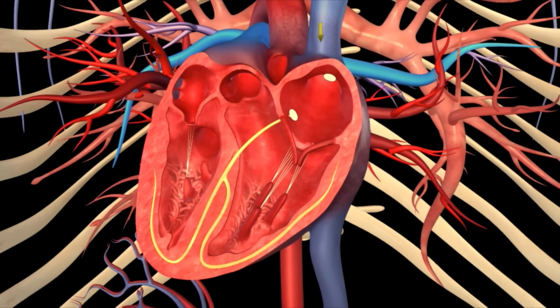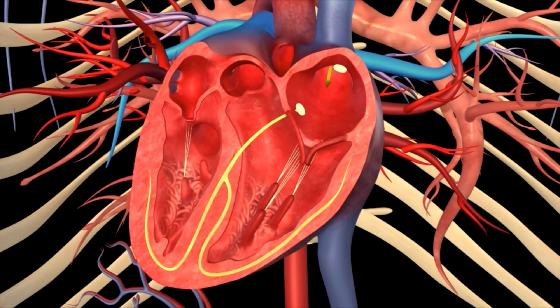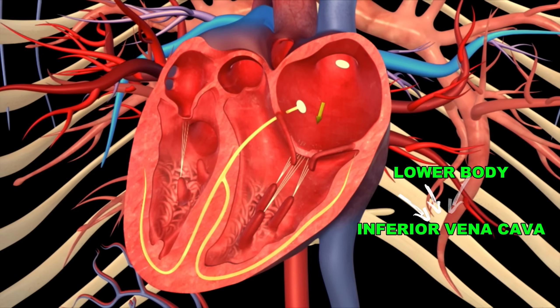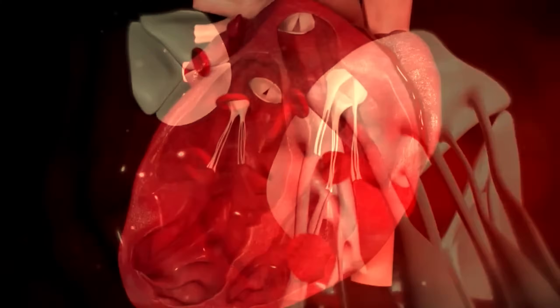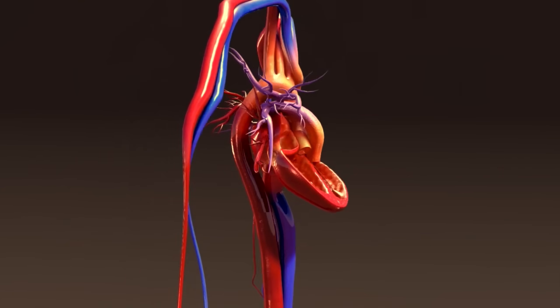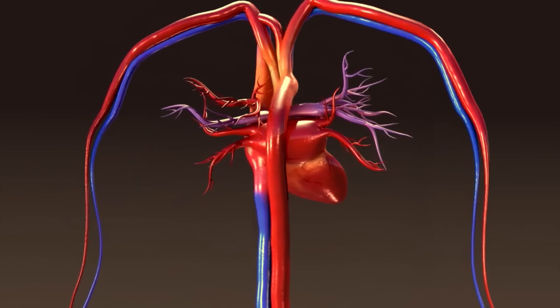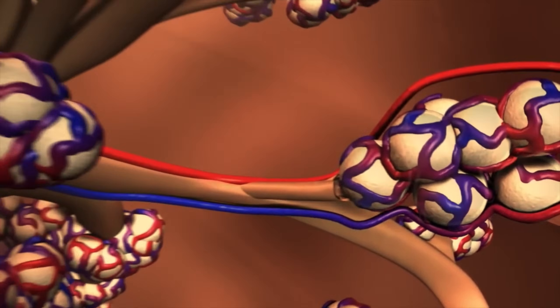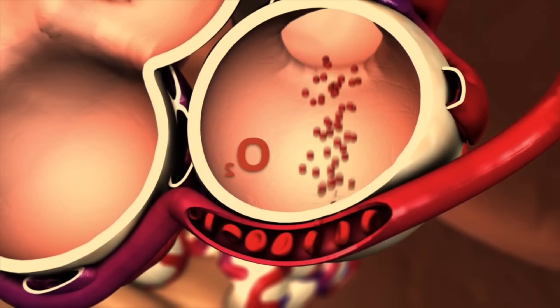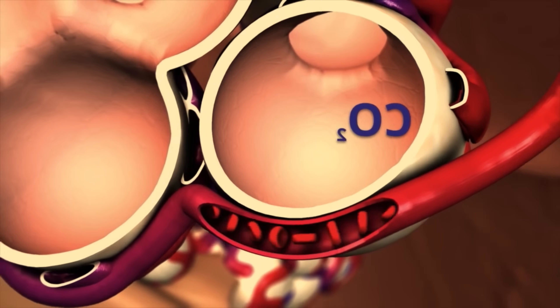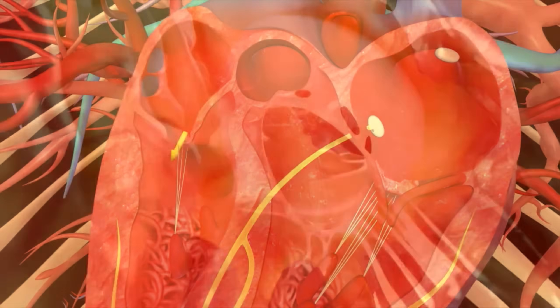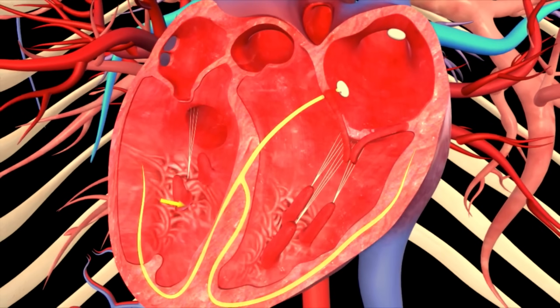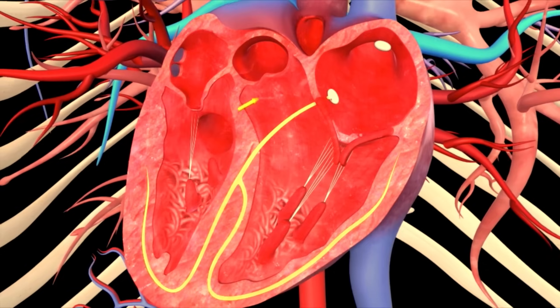Path of blood flow in the heart: Deoxygenated blood from the body enters the right atrium through the superior vena cava from the upper body and the inferior vena cava from the lower body. From the right atrium, blood passes through the tricuspid valve into the right ventricle. The right ventricle pumps the blood through the pulmonary valve into the pulmonary trunk, which splits into right and left pulmonary arteries, carrying blood to the lungs. In the lungs, blood releases carbon dioxide and picks up oxygen. Oxygenated blood returns to the heart via the pulmonary veins, entering the left atrium. From the left atrium, blood passes through the mitral (bicuspid) valve into the left ventricle. The left ventricle pumps blood through the aortic valve into the aorta, which distributes oxygen-rich blood to the entire body.